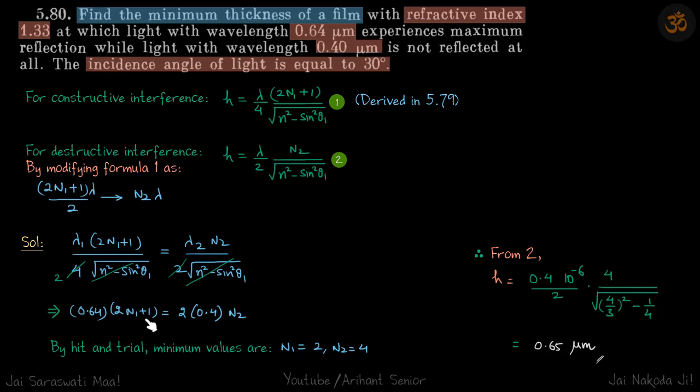By trial and error—it's trial and error because we have one equation and two variables, but we know both n1 and n2 are integers—we just put some values there and figure out that the minimum values are n1 equals 2 and n2 equals 4.